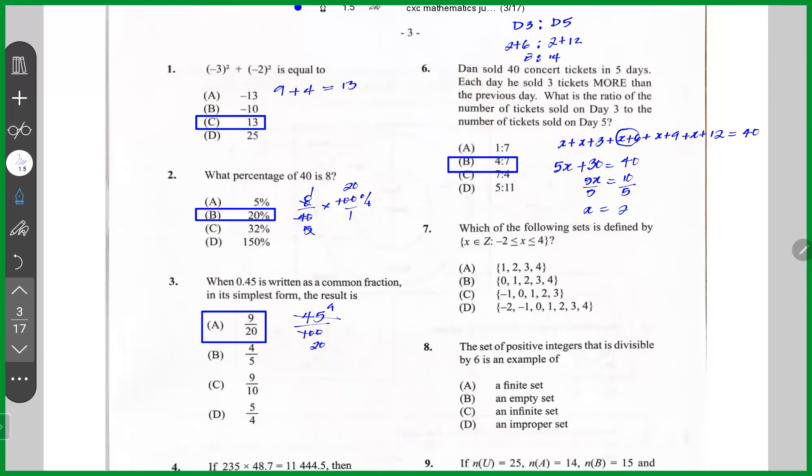Question number seven, which of the following sets is defined by X is less than or equal to four. At the same time, X is greater than or equal to minus two. The answer there is simply D.